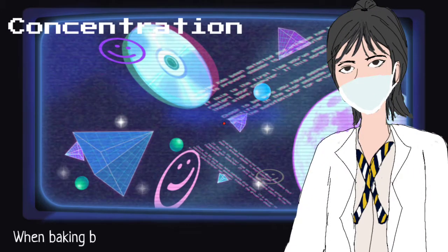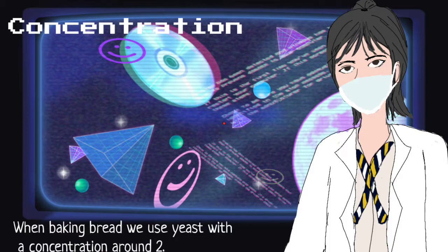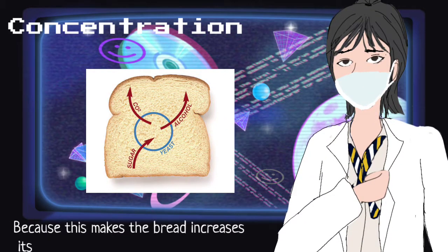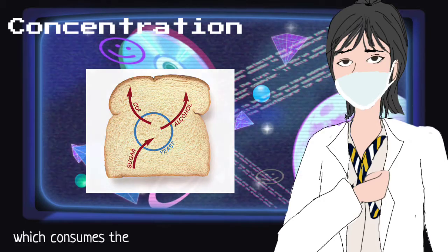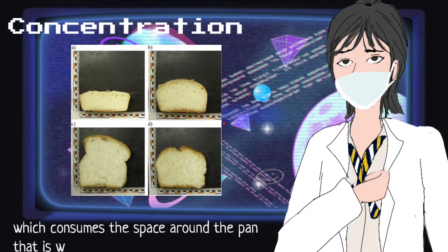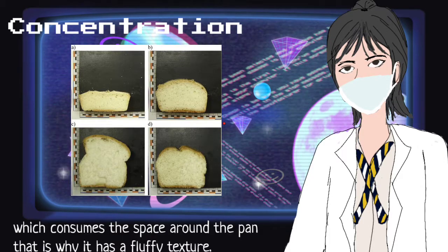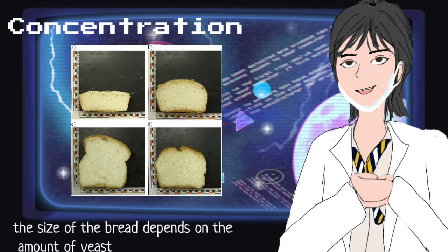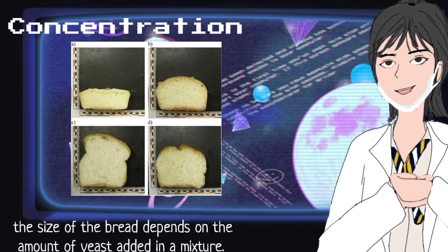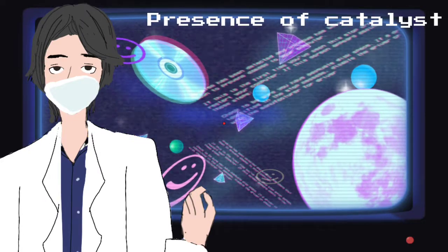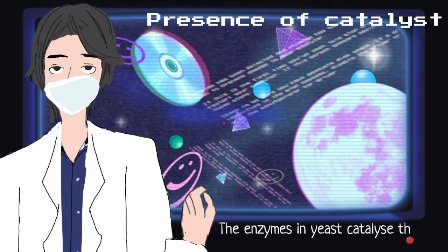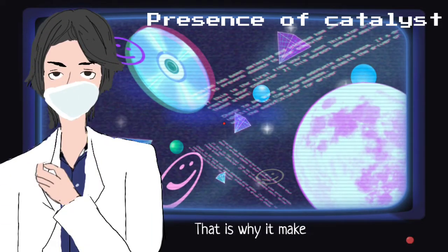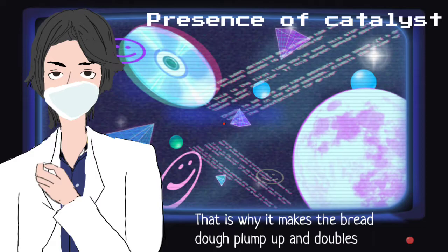Concentration. When baking bread, we use yeast with a concentration of around 2.5% to 2.8%, because this makes the bread increase in volume expansion, consuming the space around the pan — that is why it has a fluffy texture. The size of the bread depends on the amount of yeast added to the mixture. Additionally, the enzymes in yeast catalyze the breakdown of sugar molecules in grain, which makes the bread dough plump up and double in volume.